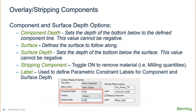In addition to following a component or surface, you can add extra depth below it. Component depth sets the depth of the bottom below the component line — always enter a positive value, it always goes downward. Surface depth sets the bottom below the existing surface when using the surface option — again, use a positive value and it will go downward by that amount.